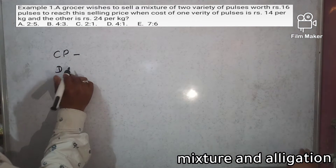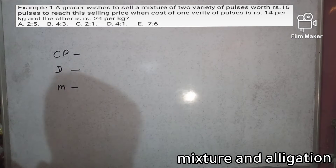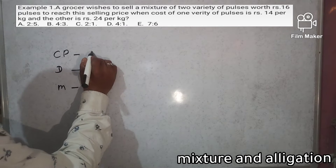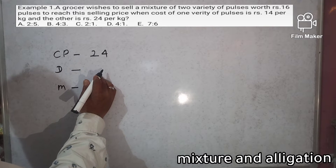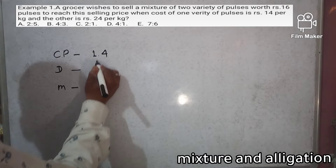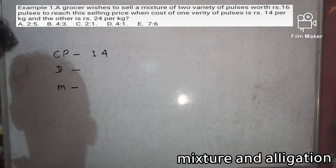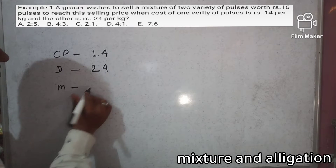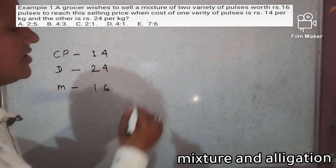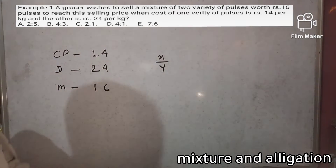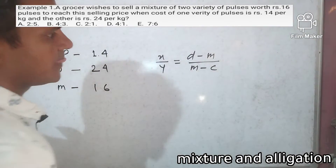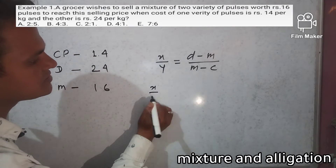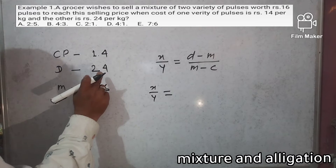So the cheaper value is 14, the dearer value is 24, and the mix is 16 per kg. We apply x by y equals dearer minus m divided by m minus c. So x by y is equal to (24 minus 16) by (16 minus 14).